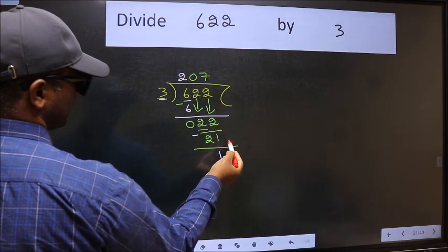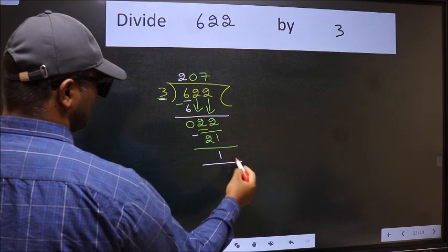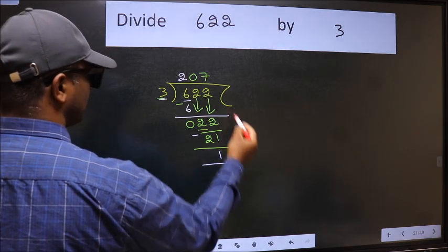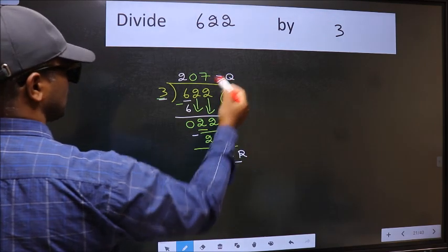No more numbers to bring down. So we stop here. This is our remainder and this is our quotient.